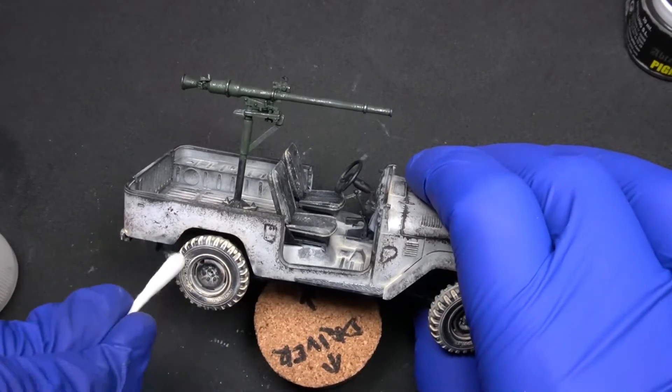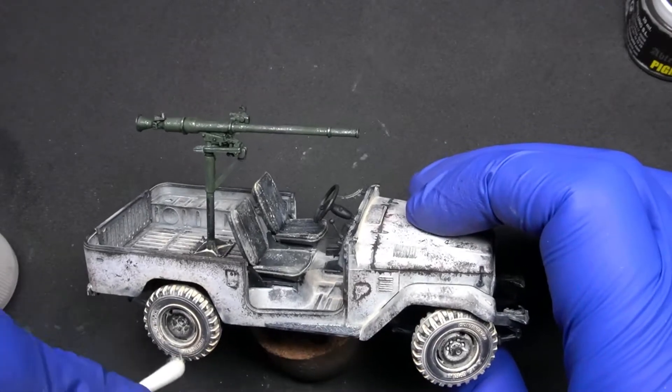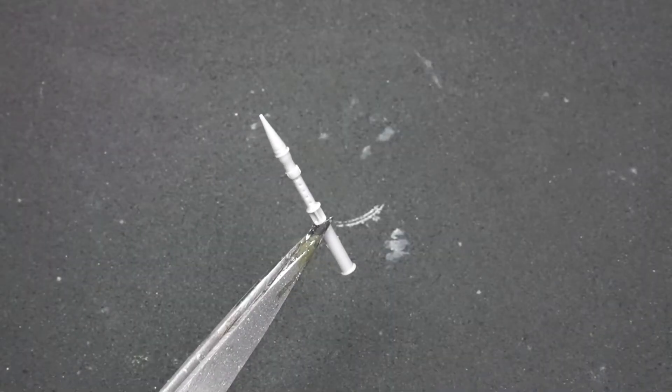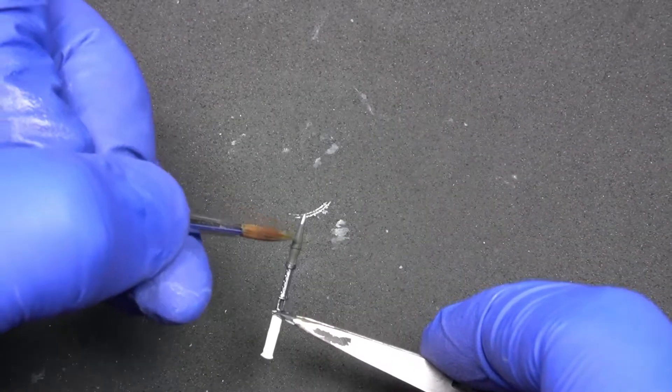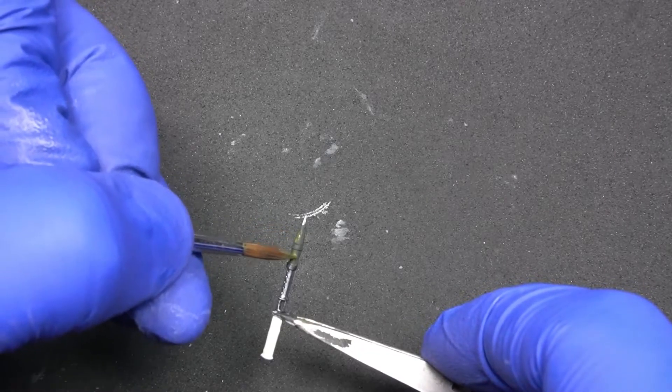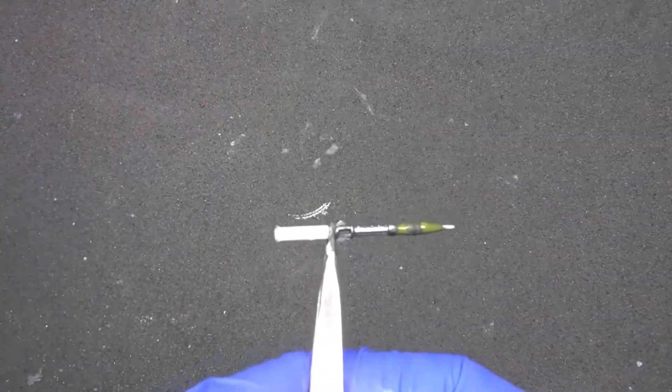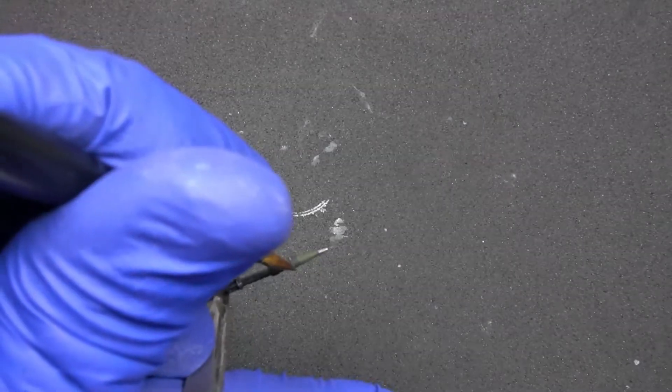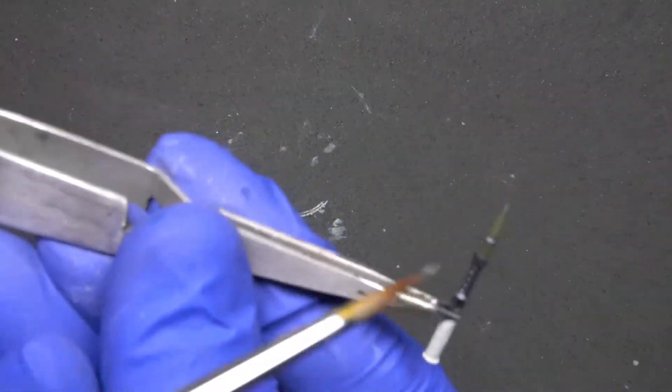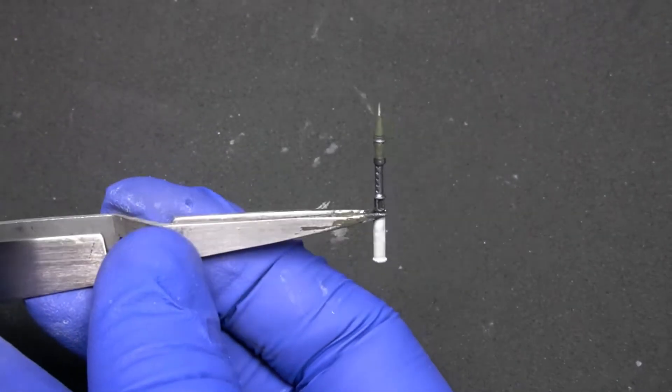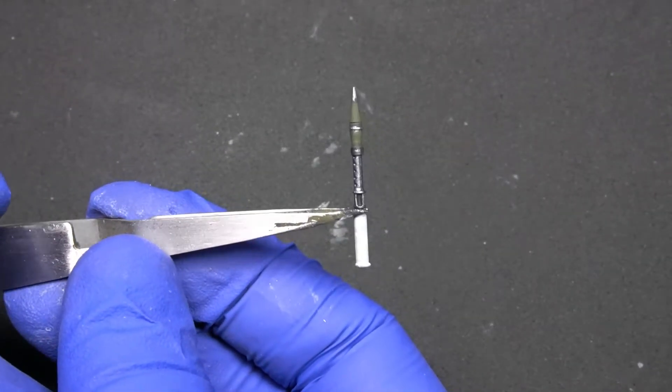And after this step, our vehicle is almost ready. But remember that we can't have a gun and no projectiles. So we'll paint some projectiles using the same colors that we've used previously to paint the recoilless gun. After we have painted the parts, we'll finish the last couple of details.